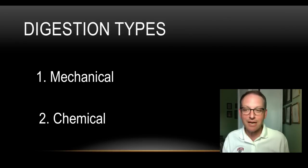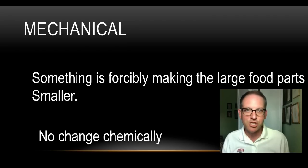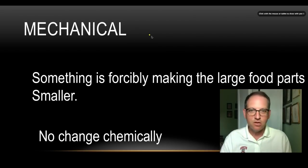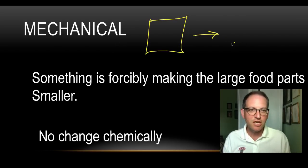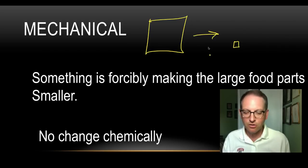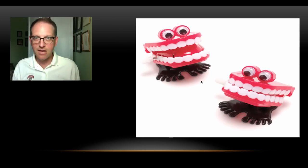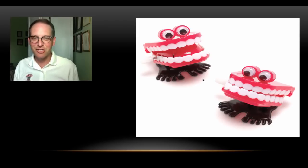Moving on to digestion types, we have mechanical and chemical. Starting with mechanical: it's something that is forcibly making the large food parts smaller, but there's no change chemically. You've got a big piece and you're changing it into a smaller piece of the same thing. There are no chemical changes — nothing has changed as far as the bonds or any of the molecules. You've just taken a big piece and made it into a smaller piece.